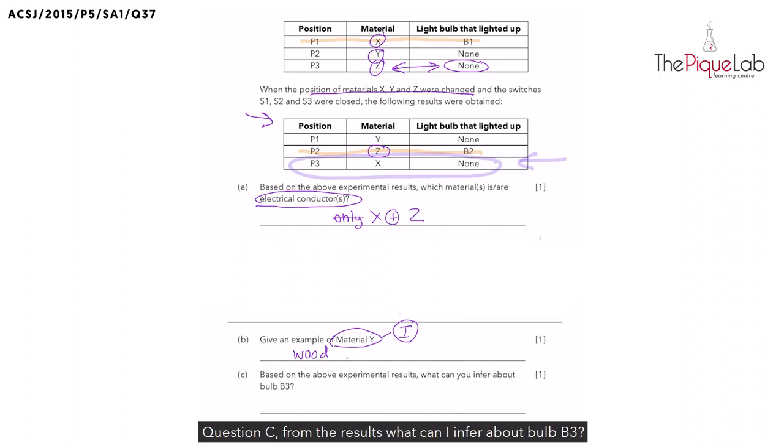Question C. From the results, what can I infer about bulb B3? Bulb B3 was the one that has already fused, preventing it from lighting up. Let's write that down.